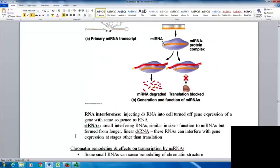With RNA interference, you inject a double-stranded RNA into the cell to turn off gene expression of a gene with the same sequence as the RNA. Small interfering RNAs are similar in size and function to microRNAs but are formed from longer linear double-stranded RNAs. These can interfere with gene expression at stages other than translation.